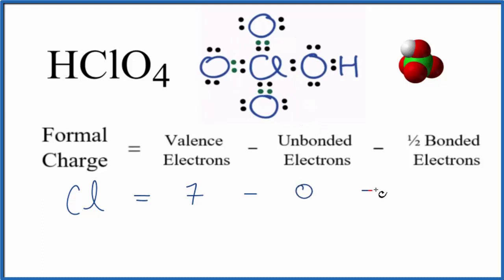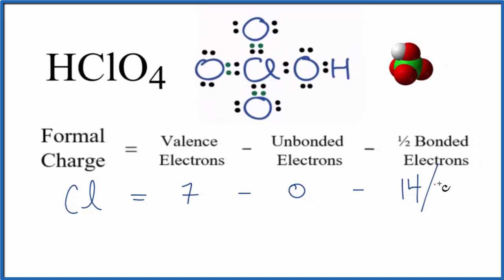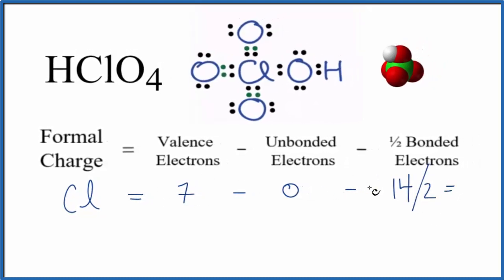Then for the bonded we have 4 plus 4 plus 4, that's 12 plus 2, 14 total bonded valence electrons. We're going to divide that by 2, so we have 7 minus 7 equals 0. So this central chlorine atom has a formal charge of 0.